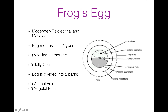The gray crescent forms due to the movement of some pigment granules away from it toward the sperm entrance point. It marks the dorsal side of the future embryo. The area of the sperm entrance point marks the anterior side of the future embryo. The side diagonally opposite to it in the vegetal hemisphere marks the future posterior side. Thus, the sperm entrance establishes the anterior, posterior, and dorso-ventral axis, as well as the bilateral symmetry of the future embryo. The vegetal pole is where yolk is concentrated.